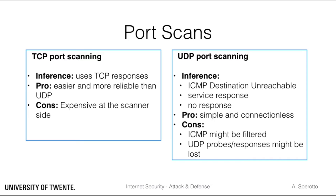UDP port scanning, on the other hand, is simpler but more unreliable. It needs more guessing for identifying open ports, because it will either wait for an error message — for example an ICMP destination unreachable message — or for a legitimate response from a certain service, DNS for example, if a DNS request was sent. If no message is received, it would assume that a UDP service is running on the probed port, having received the probe but not knowing what to do with it, simply discarding it. Of course, several things could go wrong during this inference process: ICMP might be filtered, and UDP probes or responses might get lost. In the following, we focus on a couple of examples of TCP port scanning.